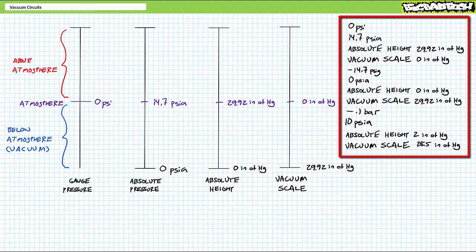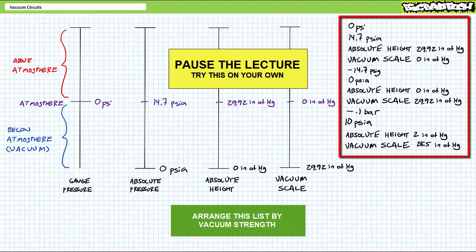Again, I'm not asking for numerical results or unit conversions. All I'm asking you is to get a general idea of what is and what is not a strong vacuum. If you're up to the challenge, think you could order this list, weakest to strongest vacuum? By all means, pause the lecture and try this on your own. If you're tracking, you should have obtained the following results.